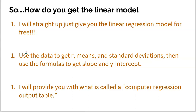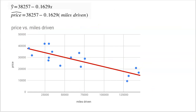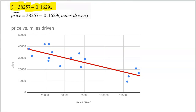The third method is using what's called a computer regression output table. At the end I'll show you what that is — it's actually no different than just being given the model. The only method that gets your hands dirty is the middle one where you do the actual work. So let's start with option one: I just give it to you. Here's that beautiful red line of best fit. The y-intercept is 38,257 and the slope is negative 0.1629. There it is, free of charge.